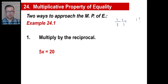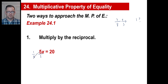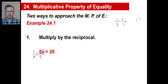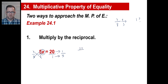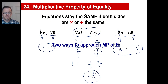Let's try it this way. If you look at 5 as a fraction, it's 5 over 1. If you want to multiply by the reciprocal, that's going to be 1 over 5. The 5s cancel, the 1s cancel, and you just have an x. But since you multiply by one-fifth on the left side, you're going to have to multiply by one-fifth on the right side. Visualizing the 20 as 20 over 1: 20 times 1 is 20, 1 times 5 is 5, 20 divided by 5 is 4.